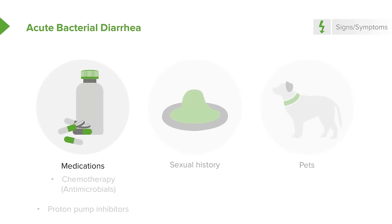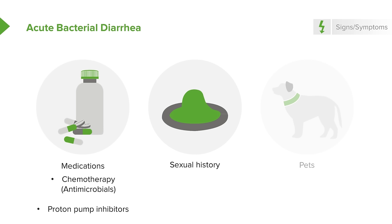Regarding clinical features, we need to discern what medications the patient may be receiving. For example, chemotherapy itself goes after rapidly proliferating tissue, and the GI tract has a rapid turnover rate, so diarrhea is a common complication of cancer chemotherapy. We need to know about the sexual history, since some sexually transmitted diseases can be associated with GI symptoms.